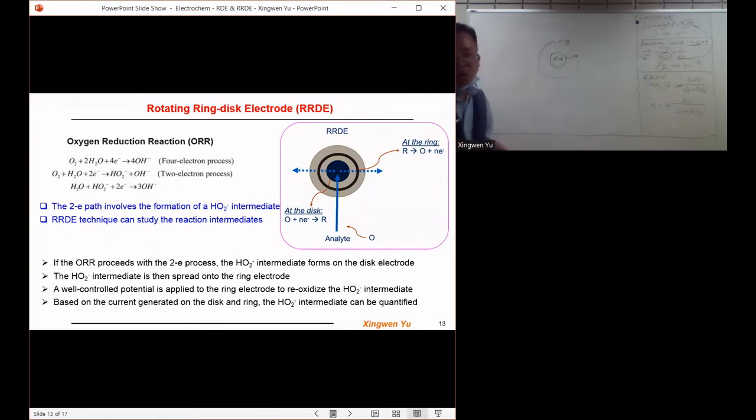We can usually hold a constant potential there, and then the intermediate species on the ring electrode will be re-oxidized to the original electric species.